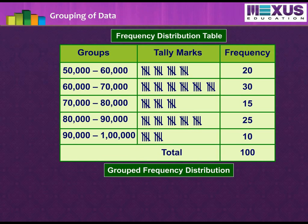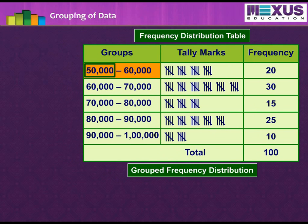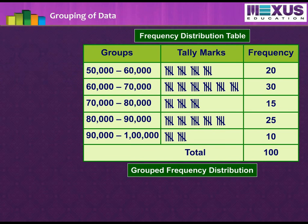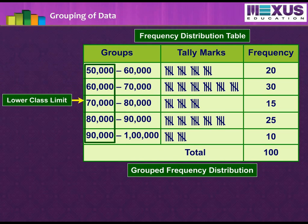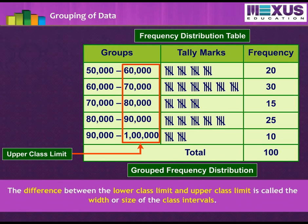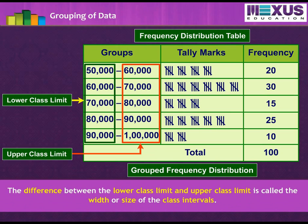For class interval 50,000 to 60,000, the value 50,000 is called the lower class limit and 60,000 is called the upper class limit. Similarly, for every group, the first observation is its lower class limit while the last is its upper class limit. The difference between the lower class limit and upper class limit is called the width or size of the class interval.